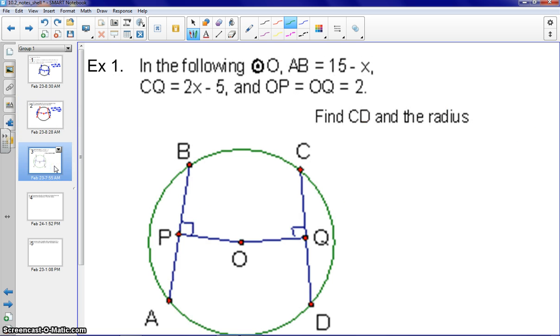So let's take a look at our first example here. In the following circle, we know that AB is 15 minus X, so we're going to label our diagram here. We've got 15 minus X, and we know that CQ is 2X minus 5, and OP, which is equal to OQ. So in other words, those are congruent to each other, and therefore they are 2.